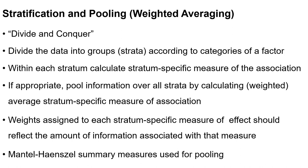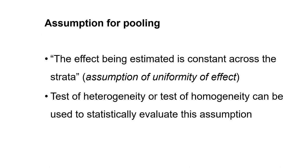Weights assigned to each stratum-specific measure of effect should reflect the amount of information in that stratum; Mantel-Haenszel summary measures are used for pooling. Before pooling, we need to verify that the effect being estimated is constant across strata — if not, effect modification is present and we should present stratum-specific estimates. We can use a test of heterogeneity or homogeneity to statistically evaluate this assumption of uniformity of effect.